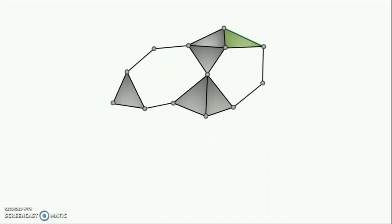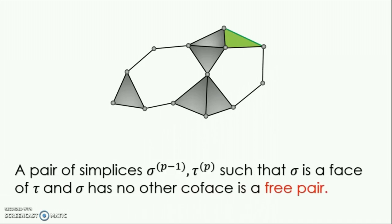Consider the dark green edge and the light green face. It's not hard to see that these can be removed without affecting the homotopy type of the complex. If a p-1 simplex sigma is a subsimplex of a p simplex tau and sigma has no other cofaces, then the pair sigma tau is called a free pair.